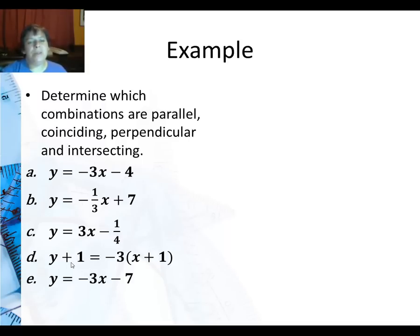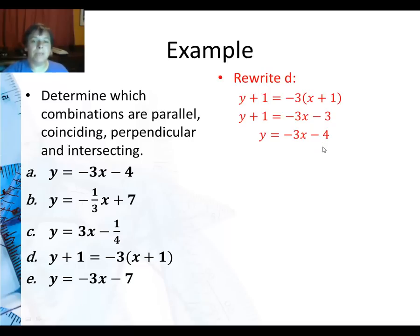I really would like to make it y equals, and the reason is we might have a coinciding line, which is exactly the same line, and that doesn't count as parallel. So let's go ahead and rewrite d. Here's the original. I'm going to distribute the negative three, so it's negative 3x minus 3 here. Then subtract one from both sides, so I get y equals negative 3x minus 4. Oh, that's the same equation as a.